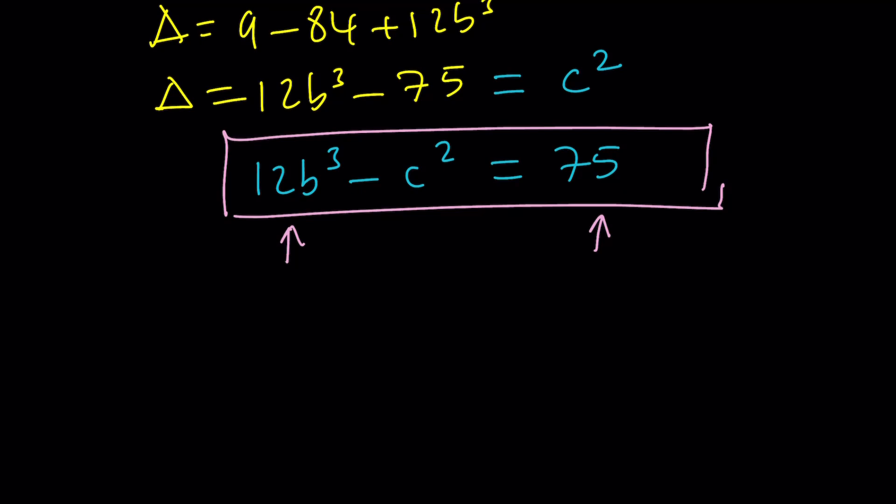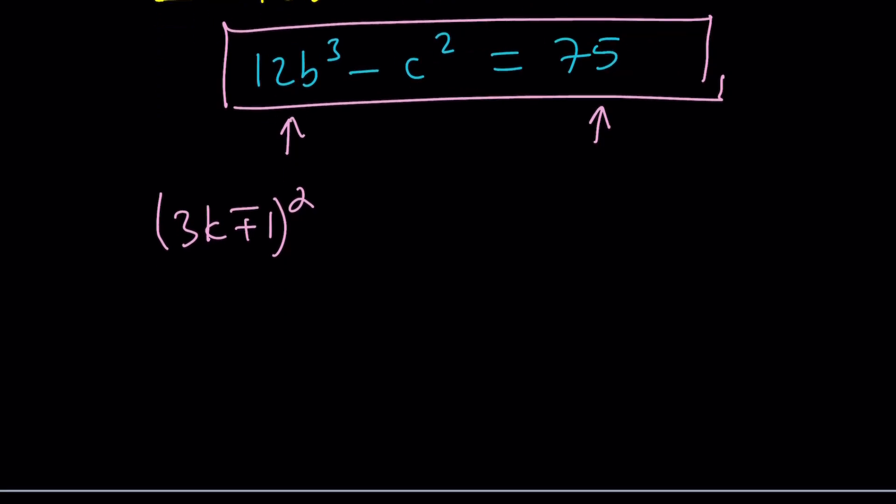In other words, c² is 3 times something. But that also means that c is a multiple of 3, because if c is not a multiple of 3, its square is not going to be a multiple of 3 either. Make sense? You can test it out with 3k ± 1. Square this, and you'll always get a remainder. So since c is a multiple of 3, we can write it as 3k and then plug it in.